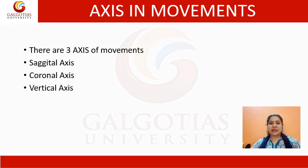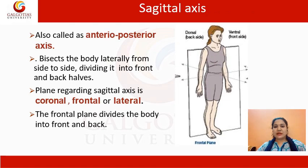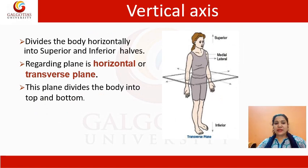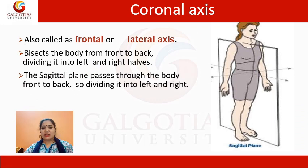Now, the axes in movements — there are three axes: sagittal, coronal, and transverse. The sagittal axis, also called the antero-posterior axis, is perpendicular to the frontal plane and bisects the body laterally from side to side, dividing it into front and back halves. The vertical axis divides the body horizontally into superior and inferior halves, and the associated plane is the horizontal plane. The coronal axis, also called the lateral or frontal axis, bisects the sagittal plane, which passes through the body dividing it into right and left.